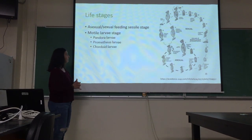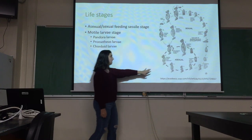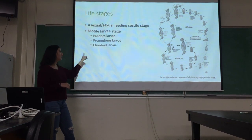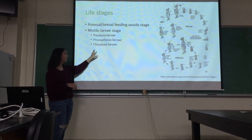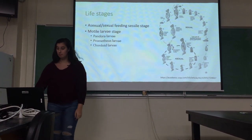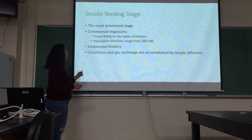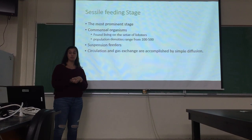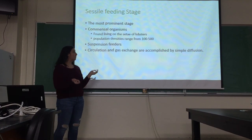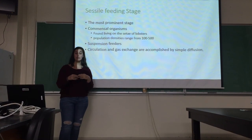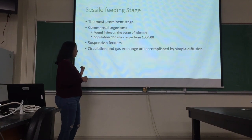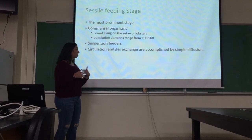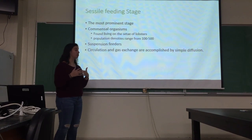The life cycle is very complex for Cycleophora. There is an asexual phase as well as a sexual phase, and they can produce three different types of larvae: the Pandora larvae, the Prometheus larvae, and the Chordoid larvae. The sessile feeding stage is the most prominent stage. They are all commensal organisms, found living on the setae of lobsters, and they are all microscopic. Population density ranges from about 100 to 500 individuals in a single lobster's mouth. They are all suspension feeders, using dense cilia around the buccal funnel to create water currents and draw water particles into the mouth. They have circulation and gas exchange through diffusion.